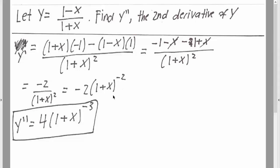And we'll be left with negative 2 times negative 2, you get 4, parentheses 1 plus x, and then you have negative 2 minus 1 for negative 3. And here's our final answer.